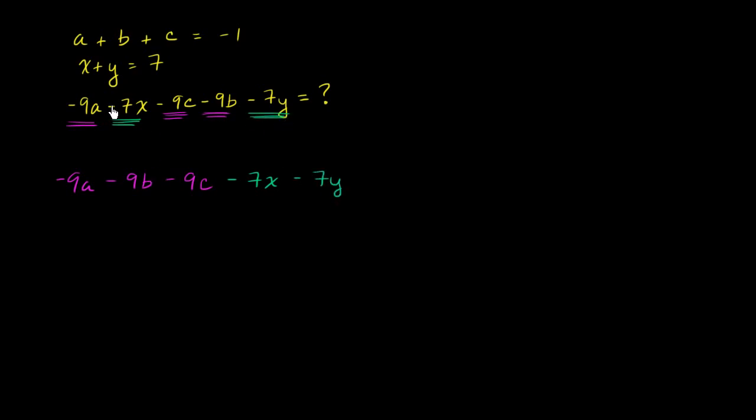So all I have done is rearranged this expression here. But this makes it a little bit clearer of what's going on. These first three terms, I can factor out a negative 9, and I get negative 9 times (a plus b plus c). And these second two terms, I can factor out a 7, minus 7 times (x plus y).